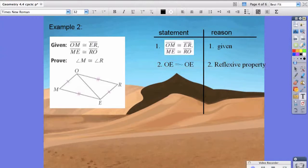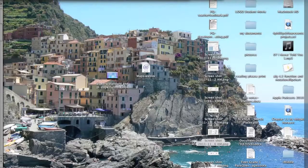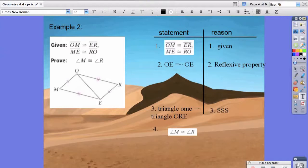Now, we could say that the two triangles are congruent, so triangle OME is congruent to triangle ORE. We could say that these two triangles are congruent because of side, side, side. And again, we're trying to prove that the two angles are the same. So, now, we could actually say that angle M is congruent to angle R because of CPCTC.